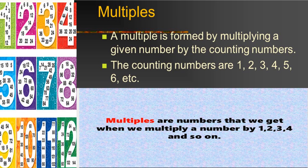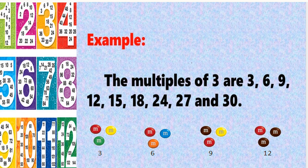So how to find the multiples of a number? Here we are just multiplying the given number by 1, 2, 3, 4, 5, 6 and so on, so that we are getting the multiples of the number.